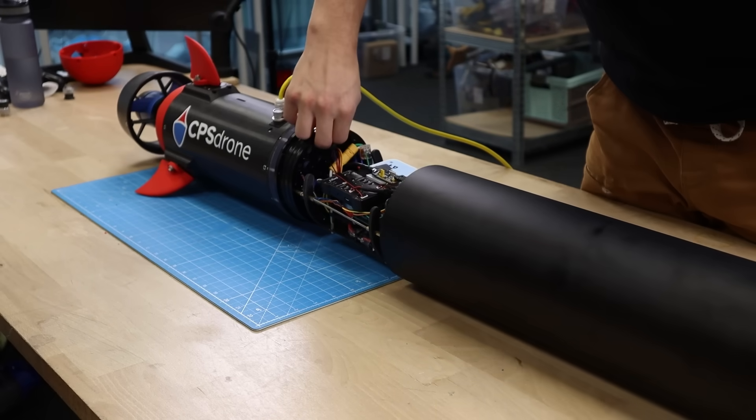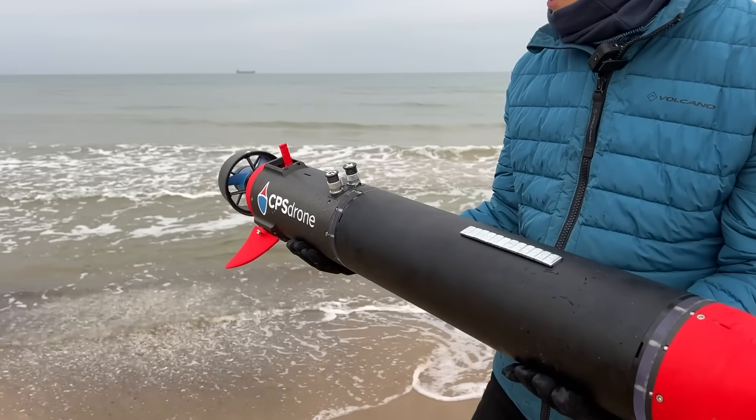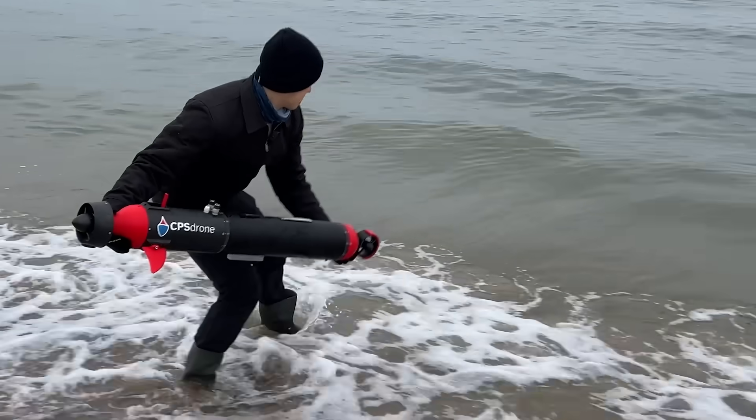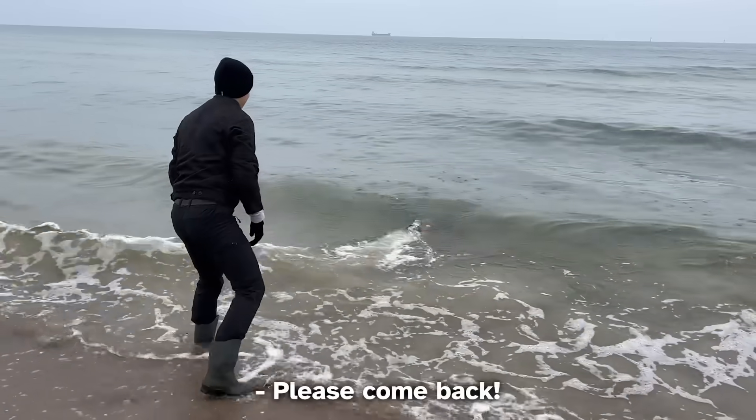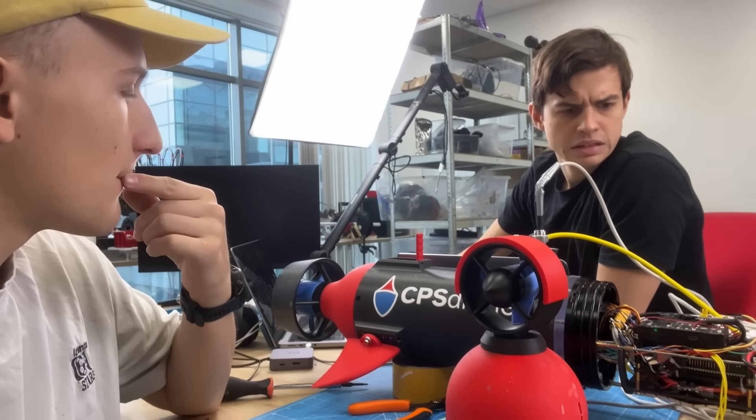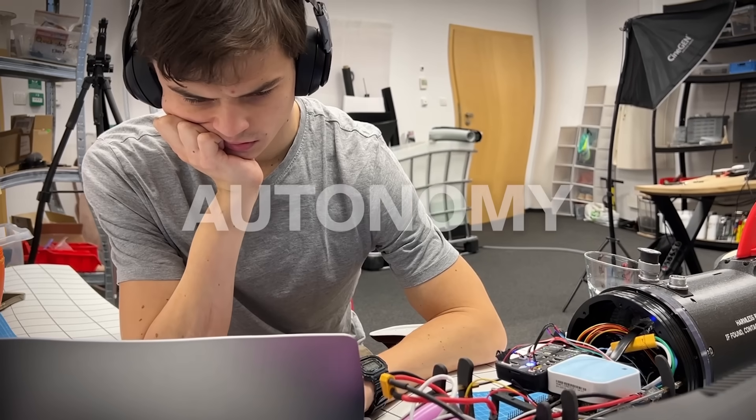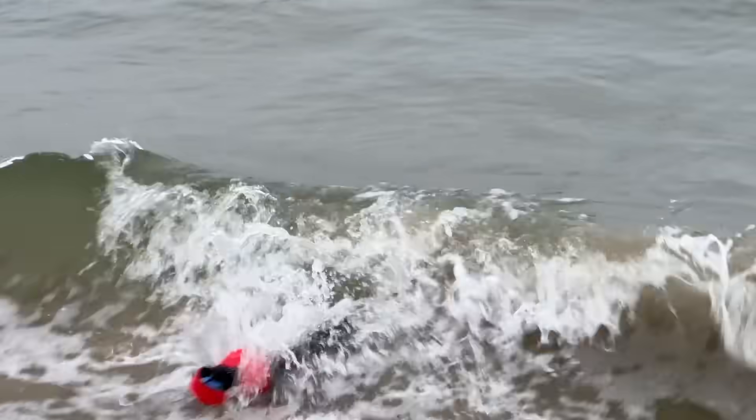Today we're building something that we wanted to own for a long while. This is a submarine that can swim by itself. Please come back! I think it's the most challenging thing we've built so far, and that's because it turns out that achieving autonomy is really hard for a couple of reasons.